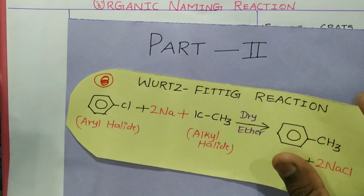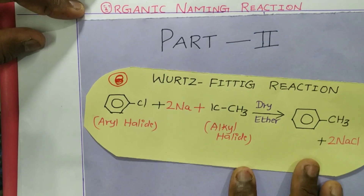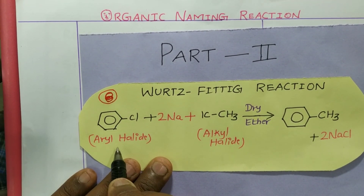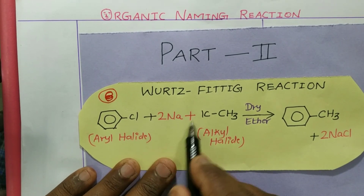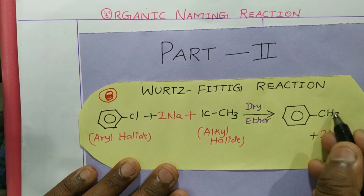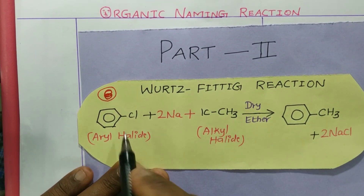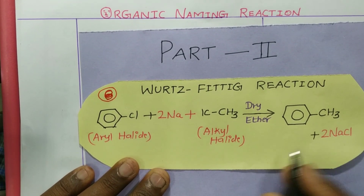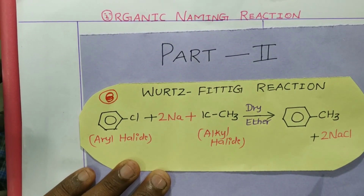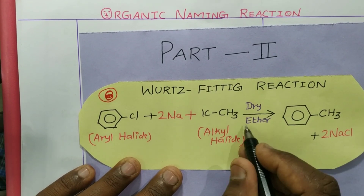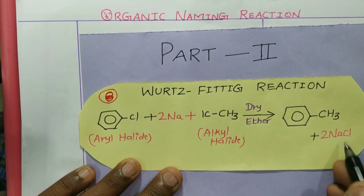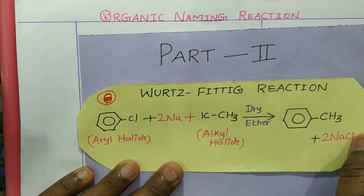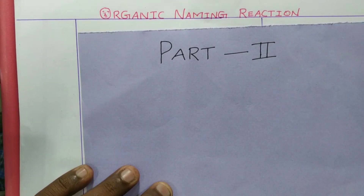Now we discuss the Wurtz-Fittig reaction, which is an interesting one. Here, one aryl halide and one alkyl halide both react with sodium in the presence of dry ether. For example, taking chlorobenzene and methyl chloride, we get toluene as the product along with sodium chloride. The formed sodium chloride is insoluble in dry ether, which helps us identify the product easily.